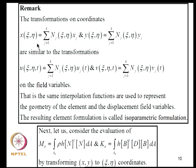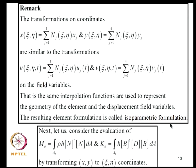The coordinate transformation X(XI,ETA) and Y(XI,ETA) expressed in terms of shape functions NJ and nodal coordinates is quite similar to the transformation of field variables, where UJ are the nodal degrees of freedom. The same interpolation functions NJ are used to represent both the field variables and the geometric variables. Since the displacement field and the element geometry are represented through the same sets of interpolation functions, the resulting element formulation is called isoparametric formulation.